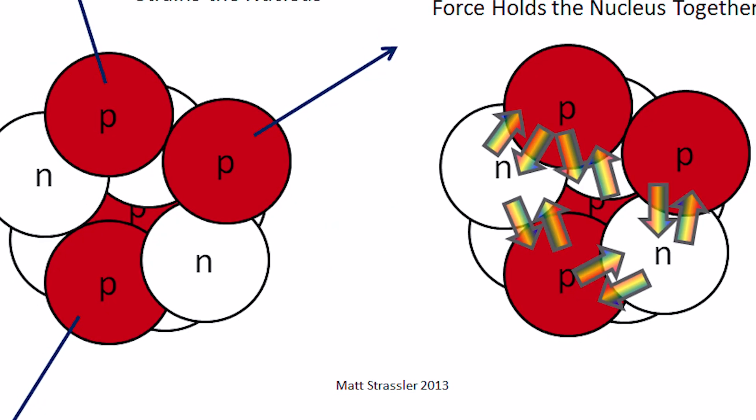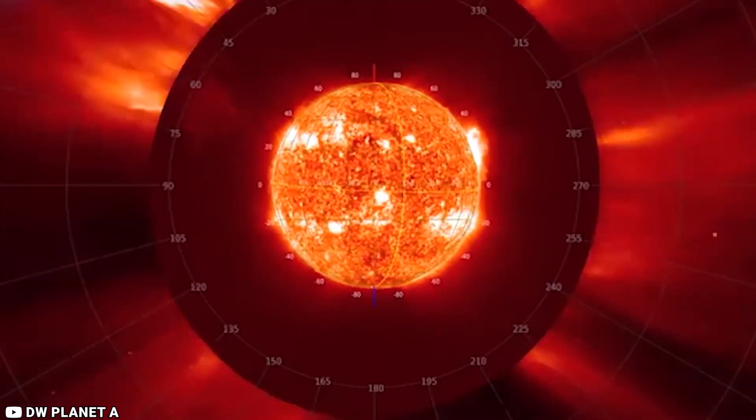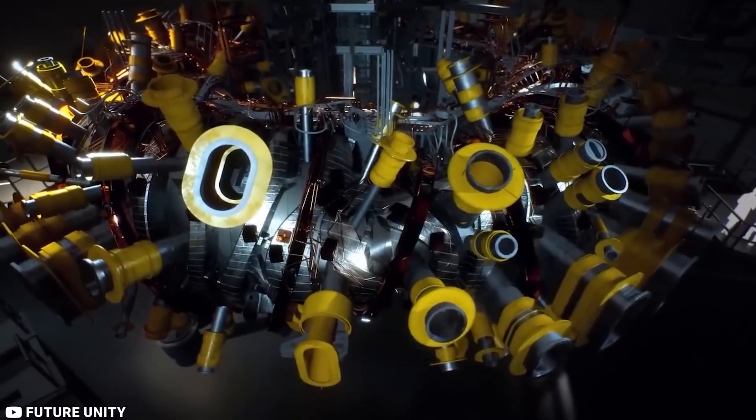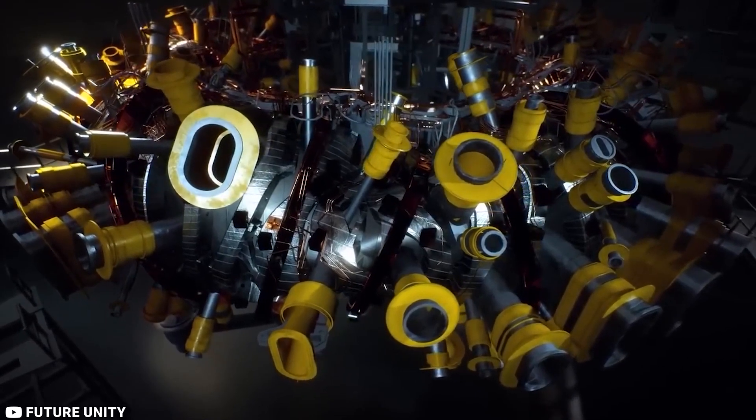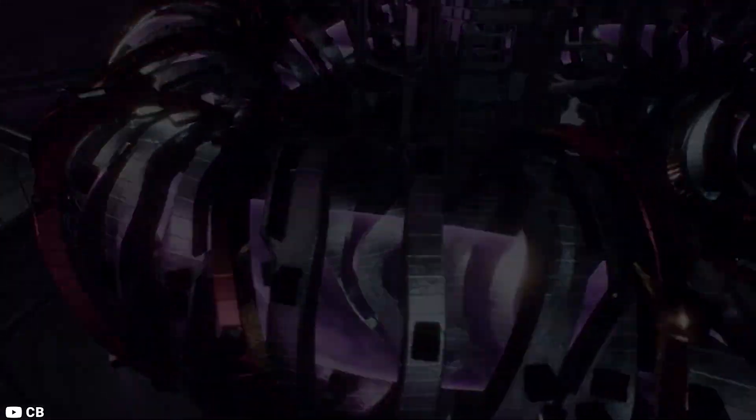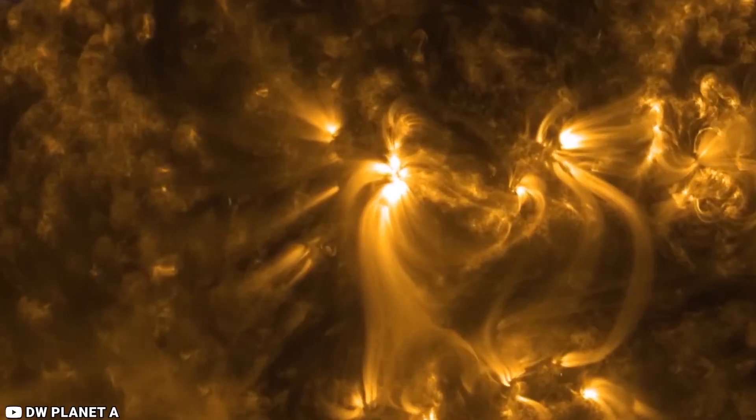The mass difference between the reactants and the products determines whether or not energy is given off or taken in during a chemical reaction. The differences in nuclear binding energy cause this change in mass. Nuclear fusion powers active or main sequence stars and results in the release of large amounts of energy.